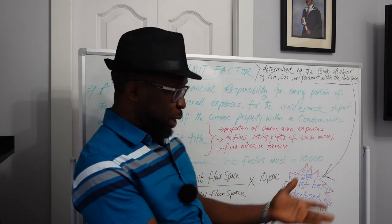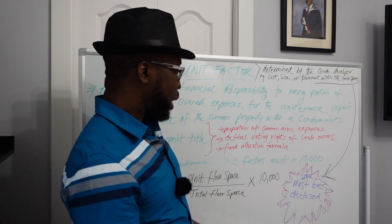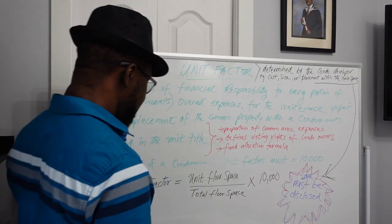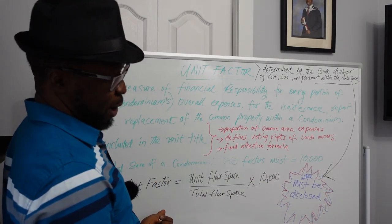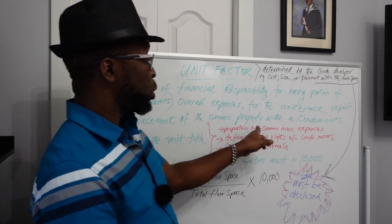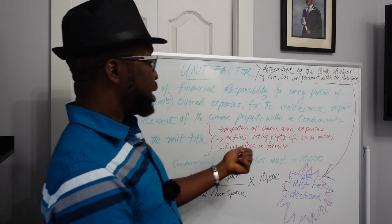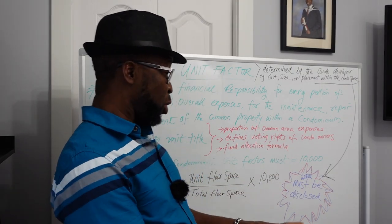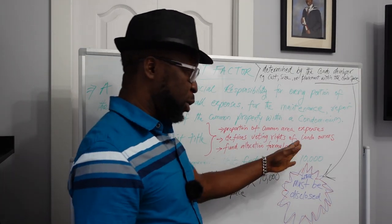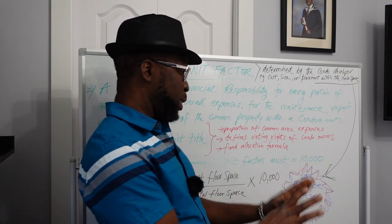If they decide the condominium is not going to exist anymore — maybe they want to close it, sell it, or terminate the condominium arrangement — how do you allocate funds? If they make money from this condominium, who gets what? That fund allocation can only use the unit factor formula. So it does three major things: it proportions common area expenses, defines voting rights, and serves as a fund allocation formula if the condominium is terminated.